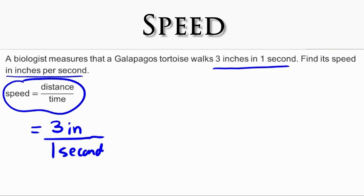In this example, speed is represented as a unit rate because the distance is being compared to just one second. Speed is typically written as a unit rate. This will be helpful later in the lesson.